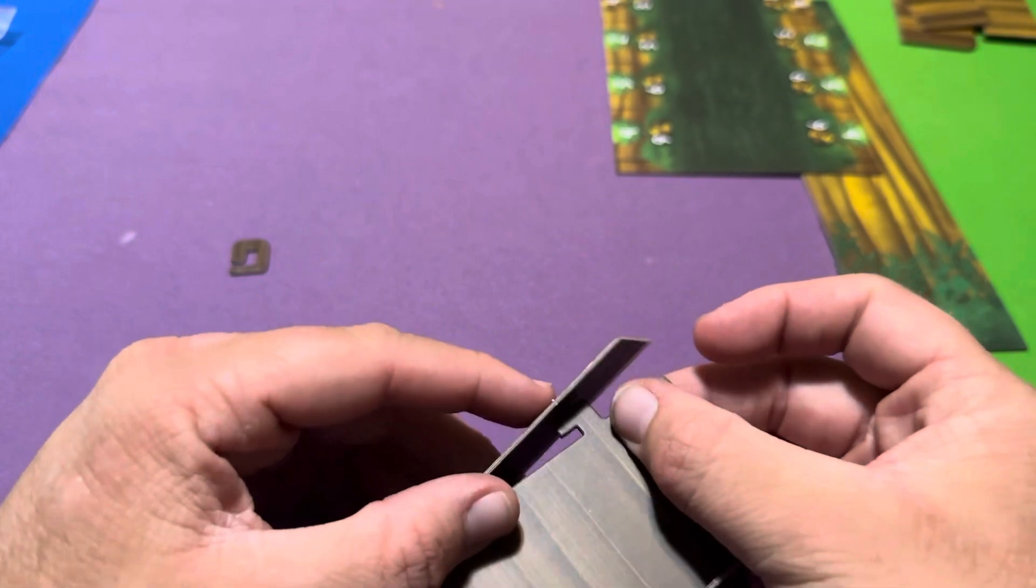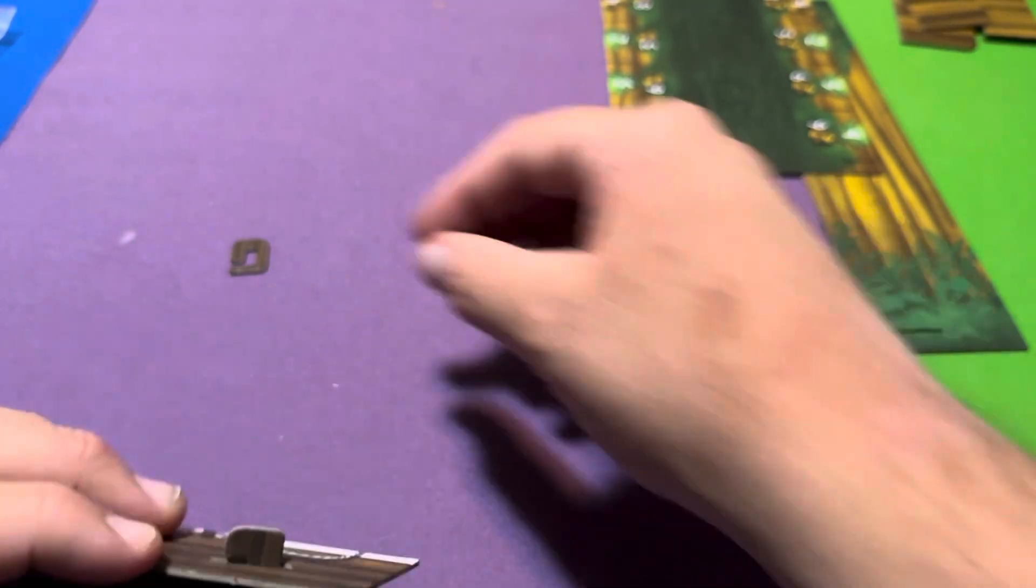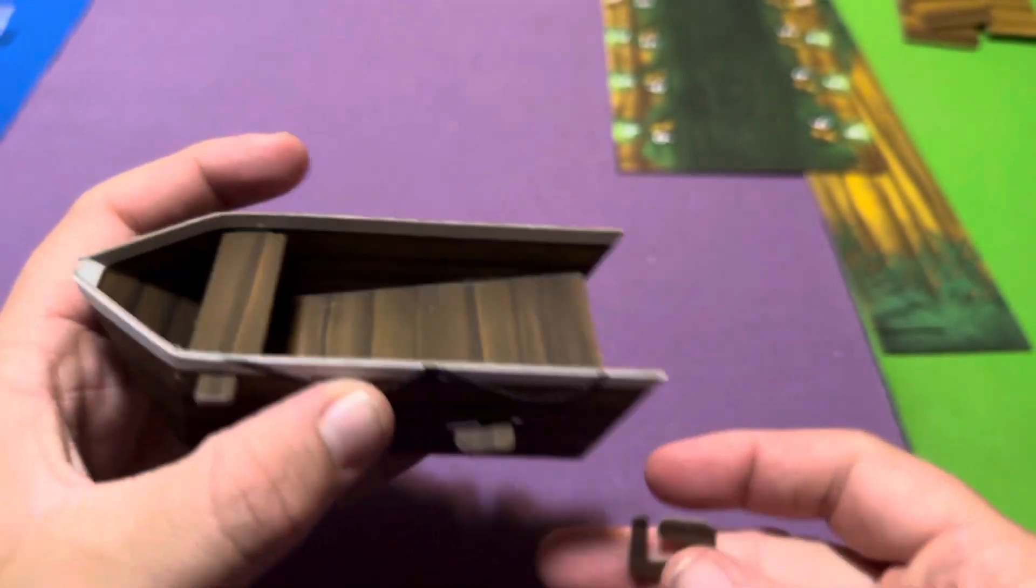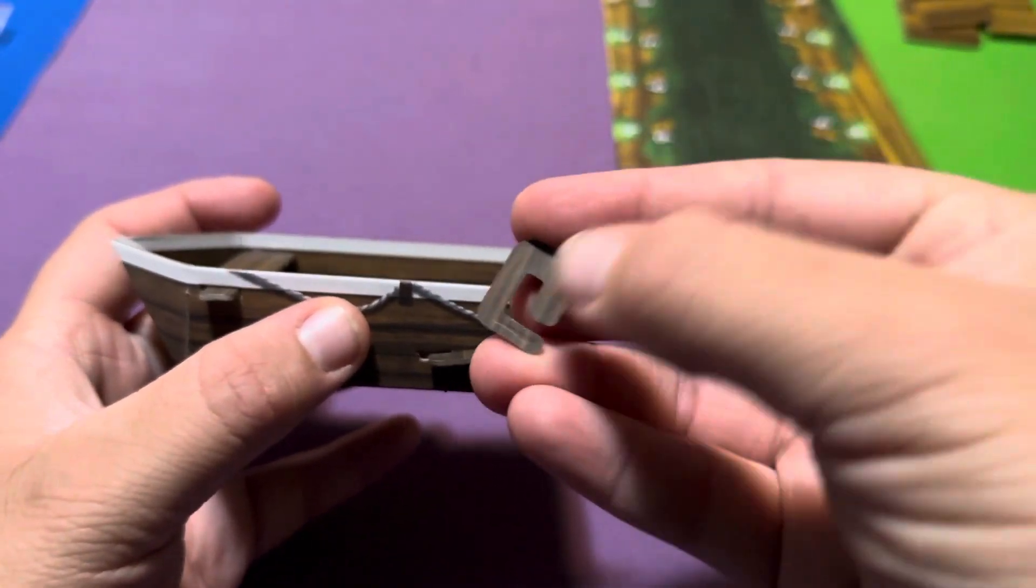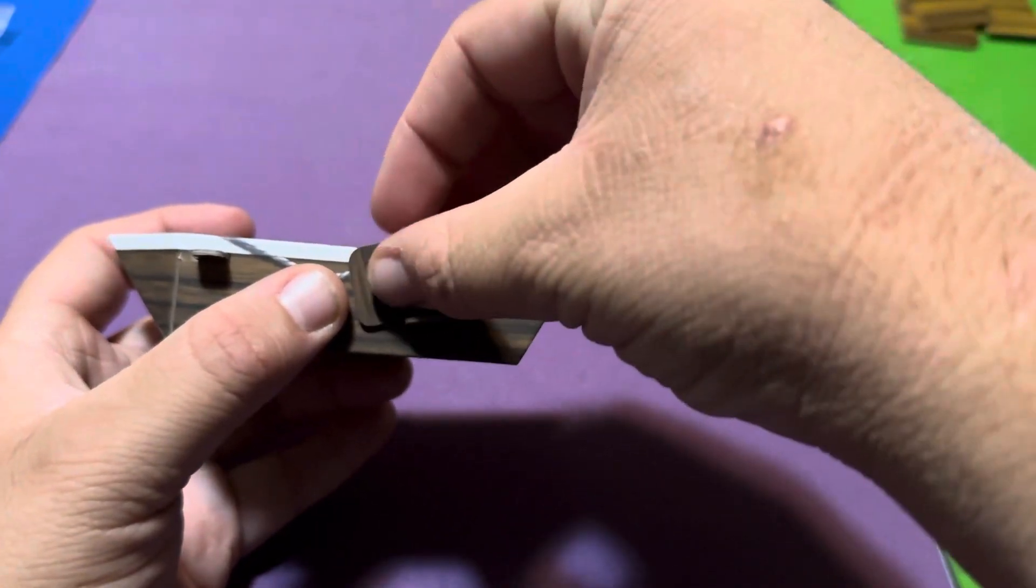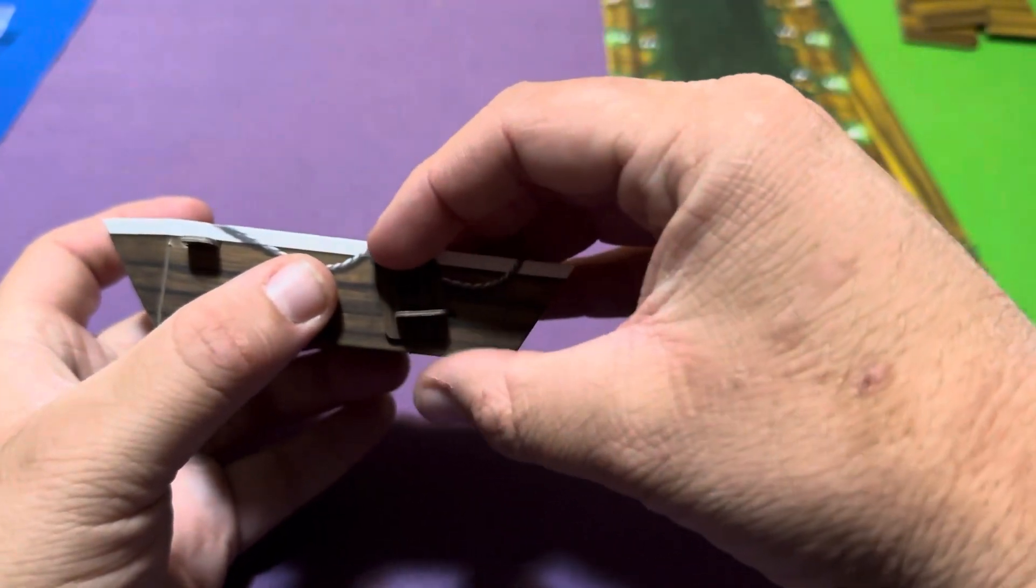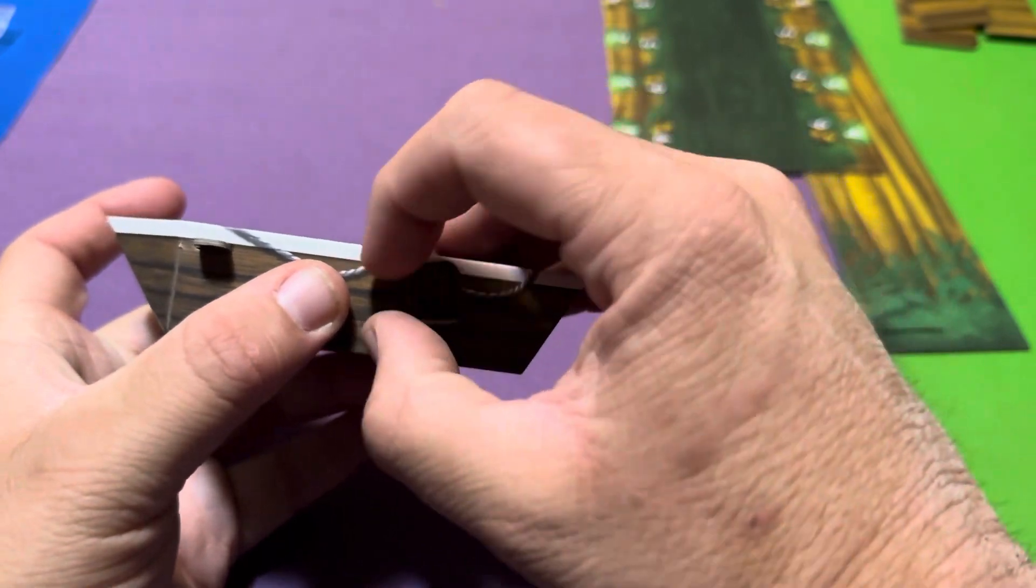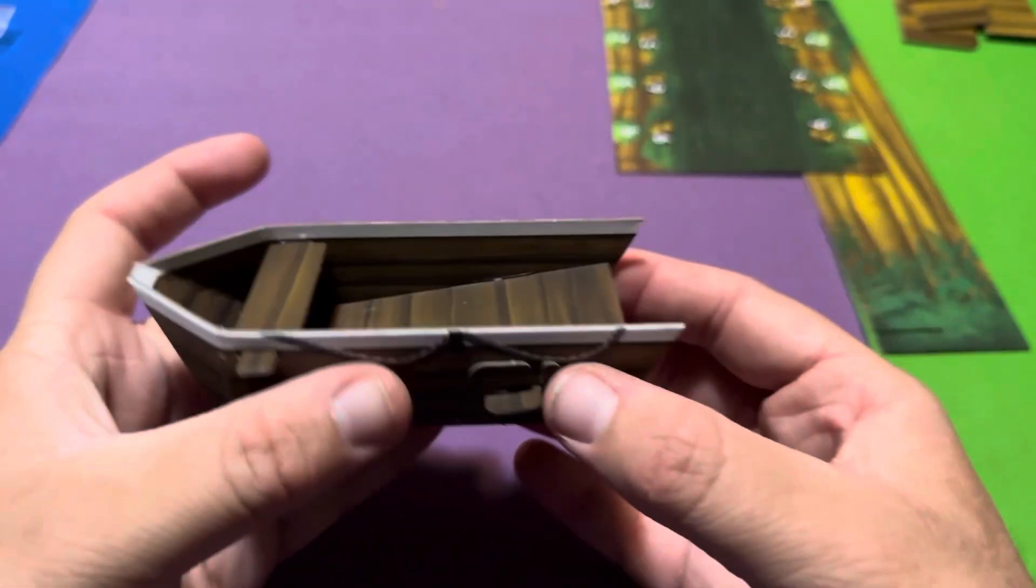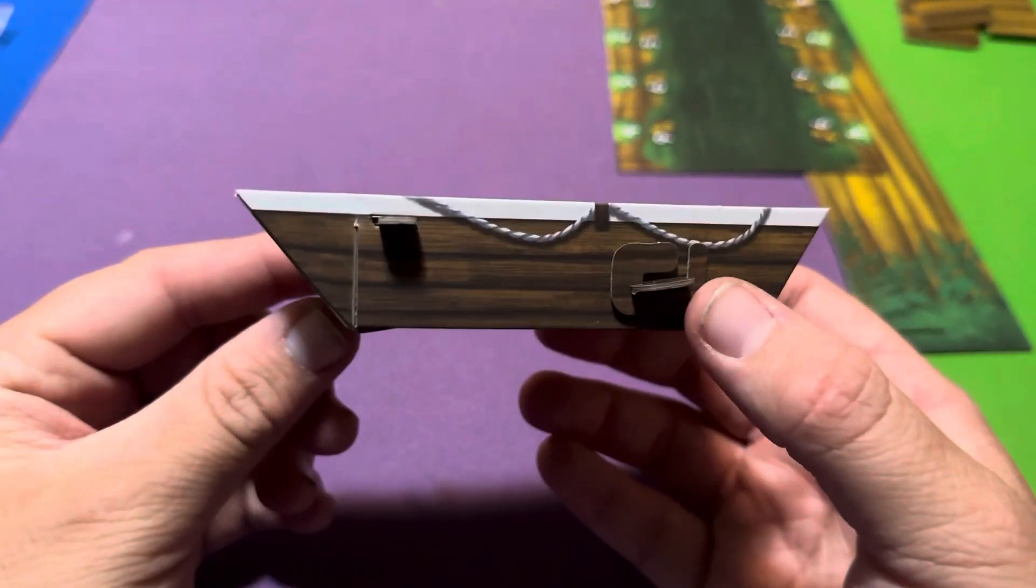I'll just do the same thing to the other side. Once again, I'm going to make sure it goes in the right way. Like that. And then you just go in, and you turn. And voila! The boat has been put together. Easy cheesy.